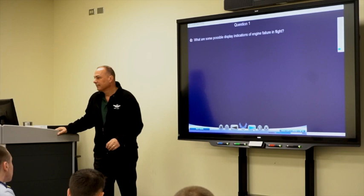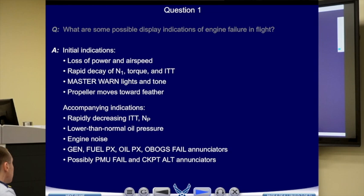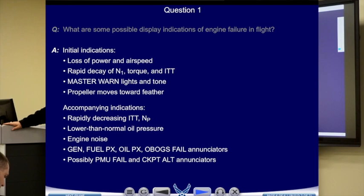You'll get a master warning light along with the GOOF lights on the caution and warning panel. Engine instruments will decay: torque, N1, ITT all drop. You'll get the caution and warning lights, loss of thrust — it gets very quiet. All of those things take place.